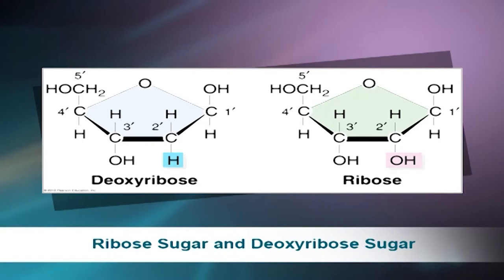There are mainly two types of sugars: deoxyribose and ribose sugar. The sugar in deoxyribonucleic acid (DNA) is deoxyribose. The 'deoxy' designation refers to the fact that the 2'-carbon atom of the sugar lacks the oxygen atom that is linked to the 2'-carbon atom of ribose, which is the sugar in ribonucleic acid (RNA). The figure on screen shows ribose sugar and deoxyribose sugar.